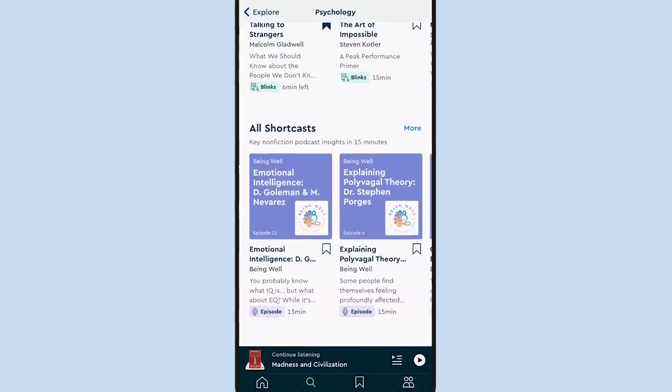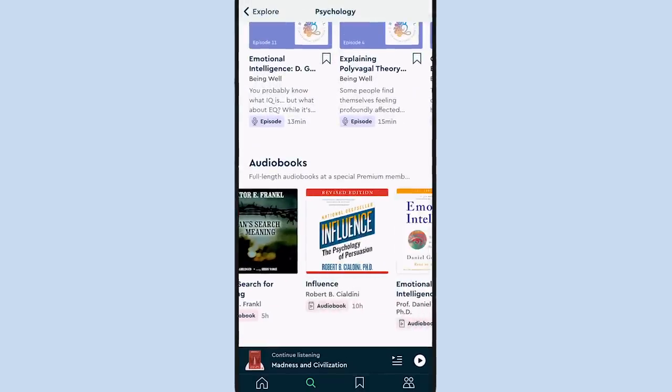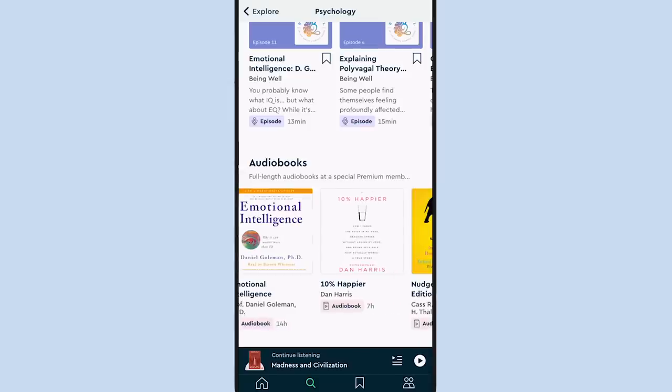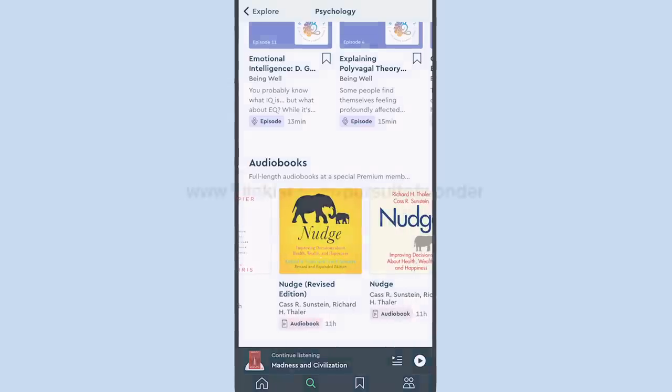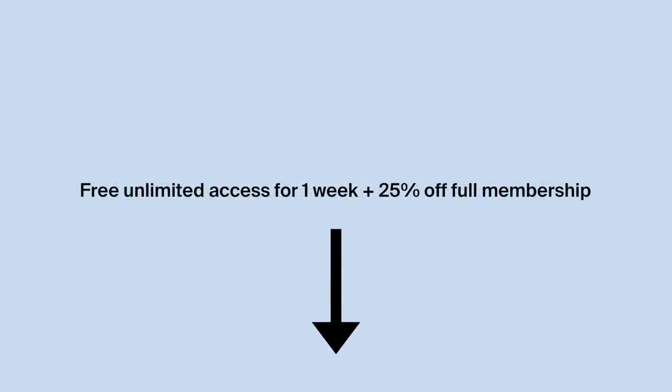Additionally, Blinkist has summaries of popular podcasts as well as complete audiobooks, allowing you to delve even further into books and topics once you've discovered that you're interested through their Blinks. Use the link in the description and you'll receive one free week of unlimited access as well as 25% off a premium membership. The free 7-day trial can be cancelled at any time within the trial period.